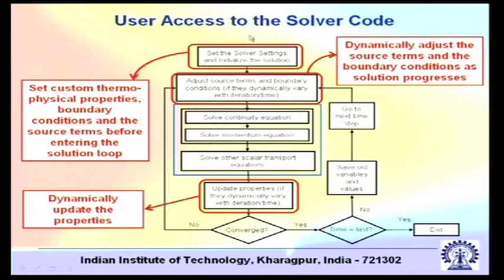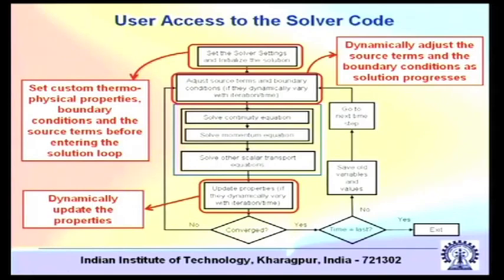Where do you require user access to the solver code? You set custom thermophysical properties, boundary conditions, and source terms before entering the solution loop — this is usually set as an initialization. You may also require to dynamically adjust the source term and boundary conditions as the solution progresses, and to dynamically update the properties. The whole idea is that the solver of a good CFD code is very robust — you do not want to touch the solver. Keep the solver as it is, but have stronger and more intricate interaction with it by writing user defined functions, facilitating the solver to address more complicated problems than the standard GUI will allow.